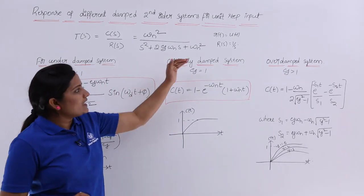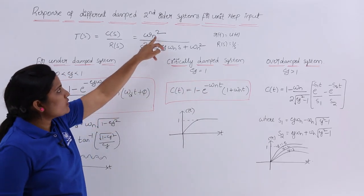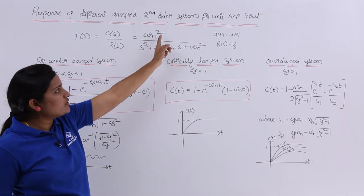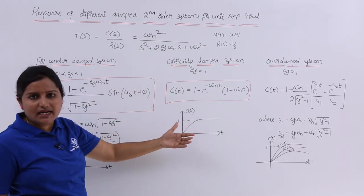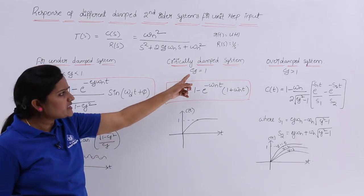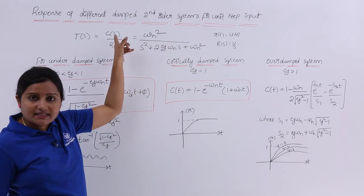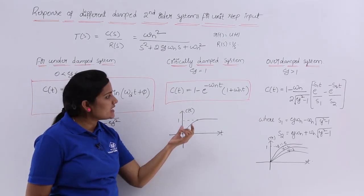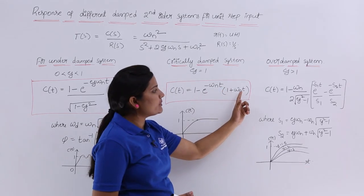Coming to the critically damped system, the same procedure applies but in place of zeta you substitute 1, so the transfer function becomes omega_n² / (s² + 2*omega_n*s + omega_n²). Substitute R(s) = 1/s, send R(s) to this side, take the inverse Laplace transform of C(s), and you get c(t) = 1 minus e^(-omega_n*t) * (1 + omega_n*t).